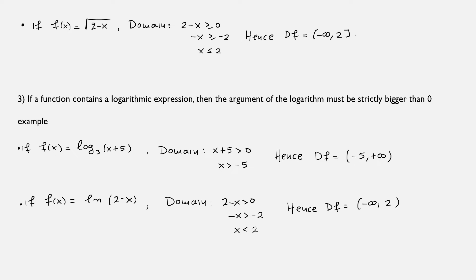The third problematic case involves logarithmic expressions. We need the argument of the logarithm to be strictly greater than zero. For example, if f(x) = log₃(x + 5), we need x + 5 > 0, so x > −5, and the domain is (−5, +∞). Similarly, if f(x) = ln(2 − x), then 2 − x > 0, so x < 2, giving the domain (−∞, 2).